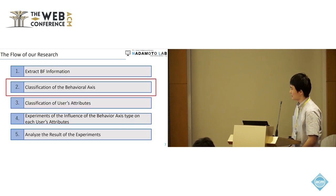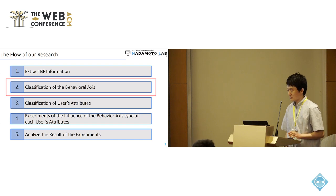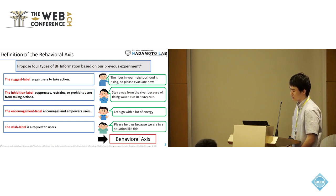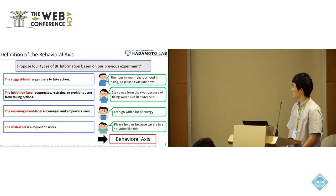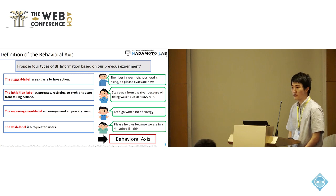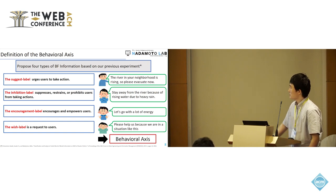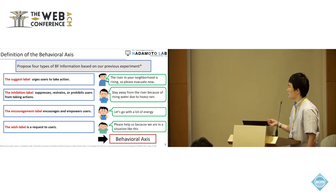Next, I will talk about how to classify the BF axis. First, I will talk about the definition of the BF axis. We propose four types of BF information based on our previous experiments: the 'suggestion' label directs users to take action; the 'inhibition' label restrains or prohibits users from taking action; the 'encouragement' label encourages and empowers users; and finally the 'wish' label makes requests to users. We refer to these four types as the BF behavior axis.